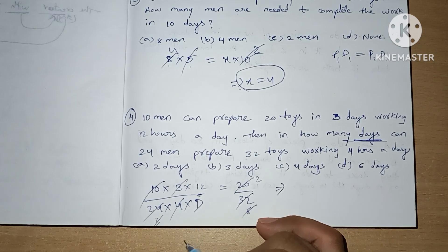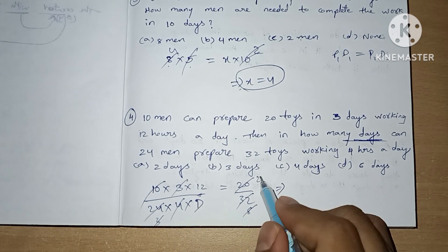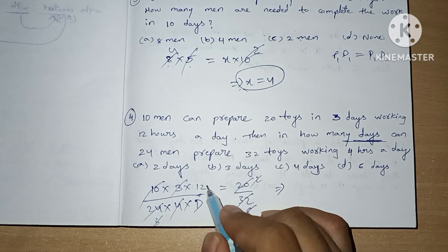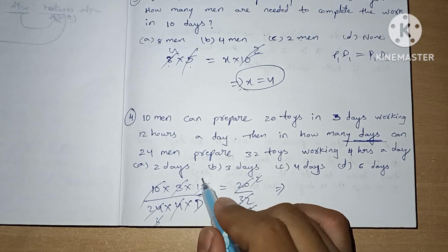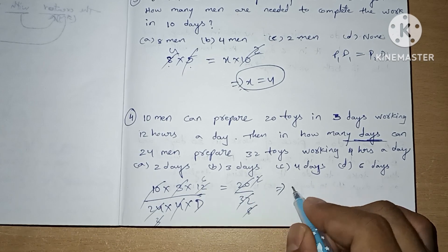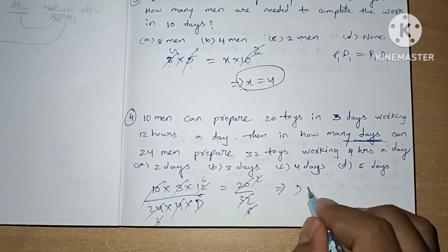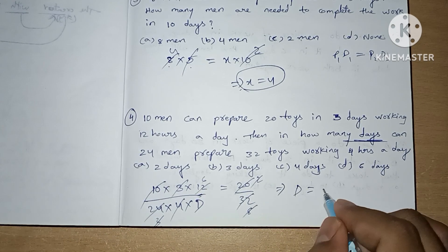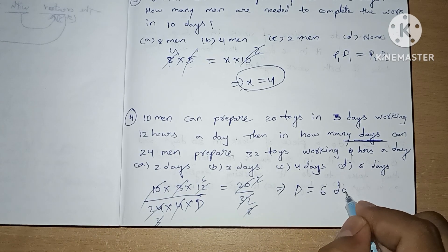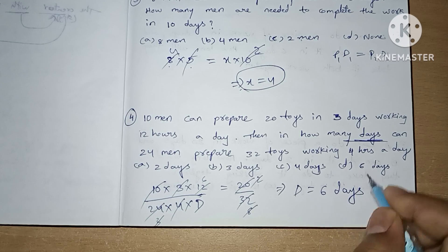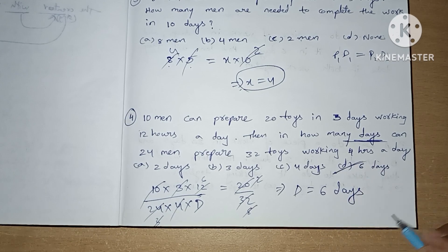After cancelling and simplifying, we are left with 6. Answer D is 6 days. Option D is our answer.